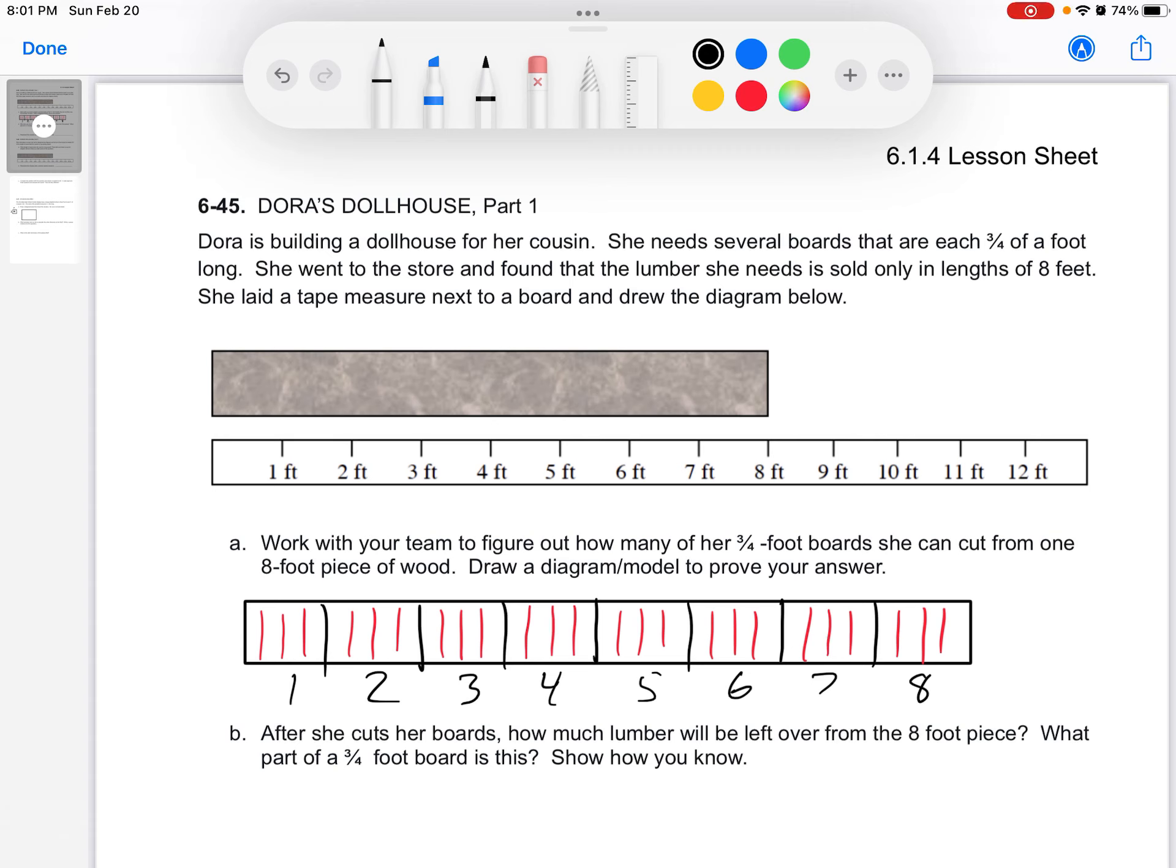All right, here we are, 6.1.4 lesson sheet. This is 6-45, Dora's dollhouse. Sounds familiar, but this is the actual problem from the book. And you'll see why it looks a little bit different now.